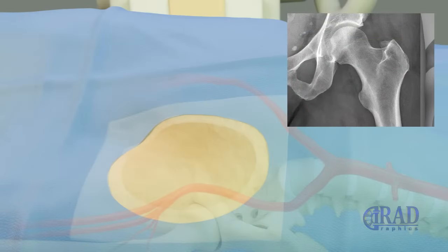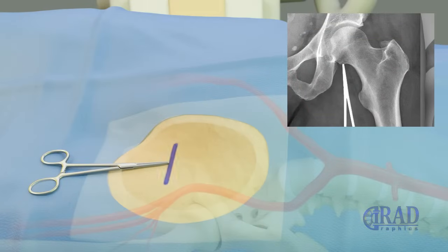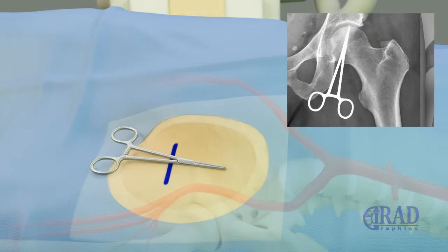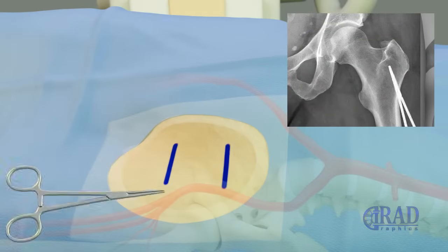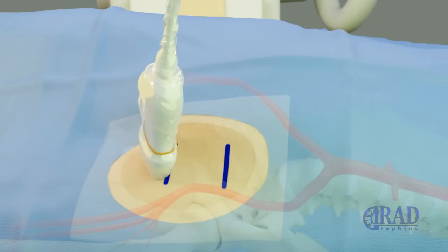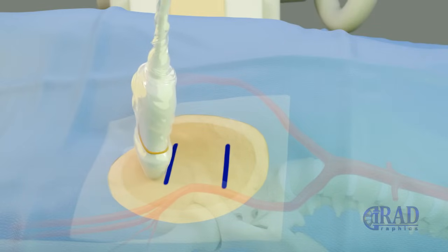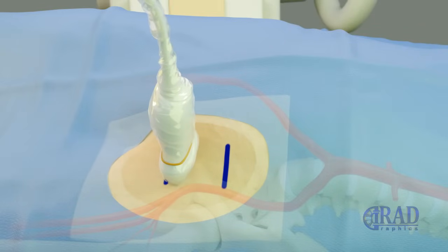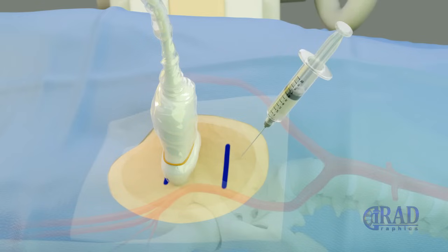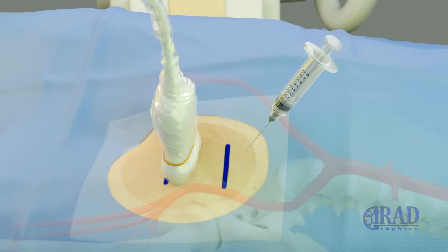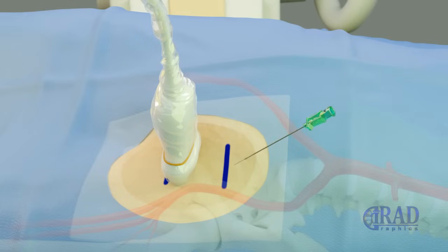For the ipsilateral approach, the skin in the ipsilateral groin area is also marked based on the upper and lower margins of the femoral head. Once the access site to the common femoral artery is identified under ultrasound guidance, the skin at the entry site is numbed with an injection of lidocaine. Then, the ipsilateral common femoral artery is accessed under ultrasound guidance using a micropuncture needle directed toward the target knee.